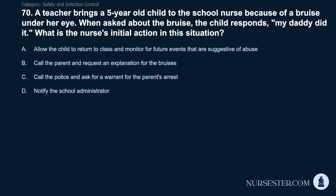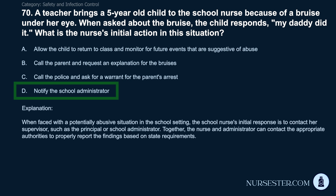Question 70: A teacher brings a 5-year-old child to the school nurse with a bruise under her eye. When asked, the child responds, 'My daddy did it.' What is the nurse's initial action? A) Allow the child to return to class and monitor for future events. B) Call the parent and request an explanation. C) Call the police and ask for a warrant for the parent's arrest. D) Notify the school administrator. Correct answer: D. Notify the school administrator. When faced with a potentially abusive situation in the school setting, the school nurse's initial response is to contact her supervisor such as the principal. Together, the nurse and administrator can contact the appropriate authorities to report findings based on state requirements.